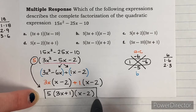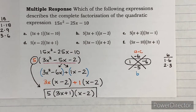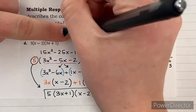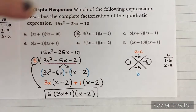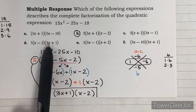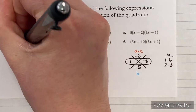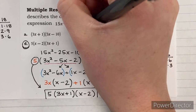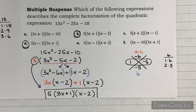This is the complete factorization. Matching it to the answer choices, that's answer choice B. The other correct answer is D — the only difference between B and D is that the factors are flipped, which doesn't matter. So be careful when you see 'multiple response' because it just means there is more than one correct answer.